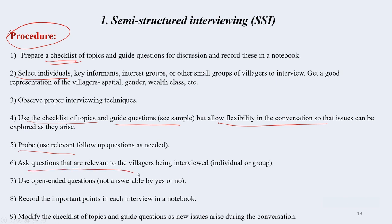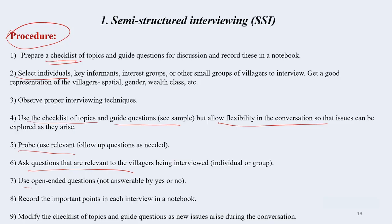Ask questions that are relevant to the villagers — it is important. We cannot, for example, carry out PRA in Rajasthan and ask questions about floods, or come to northeast Assam and ask the villagers something related to acute drought. We need to keep those things in mind. Use open-ended questions, record the important points in the notebook, and modify the checklist topics, guide questions, and new issues during the conversation, because it will evolve with the conversation.